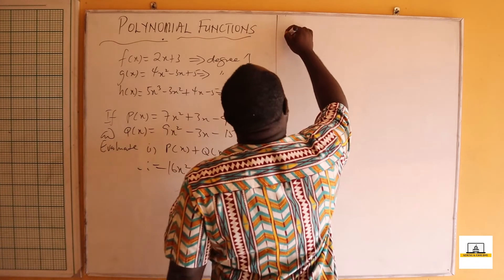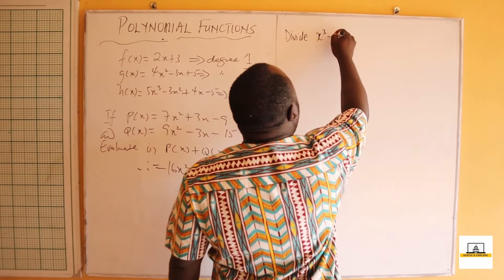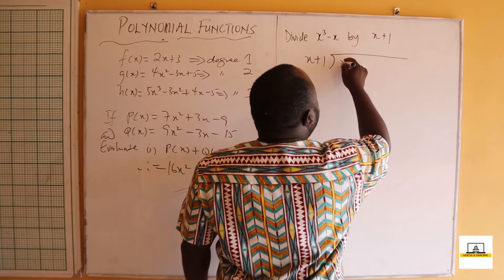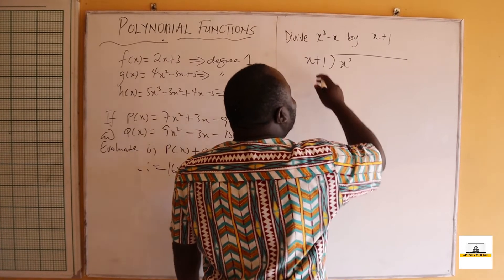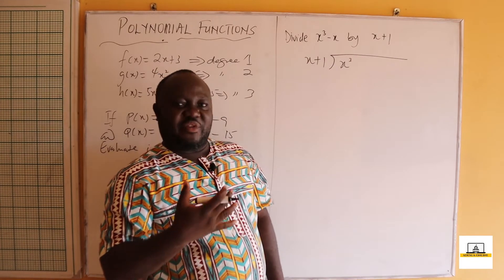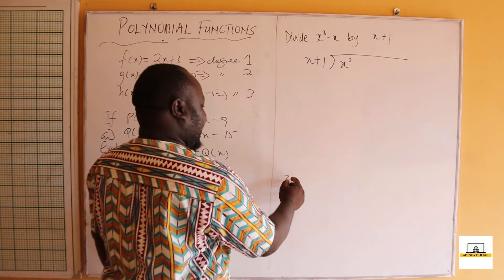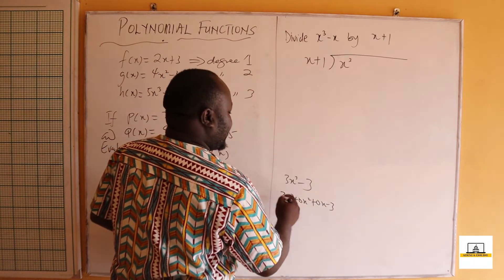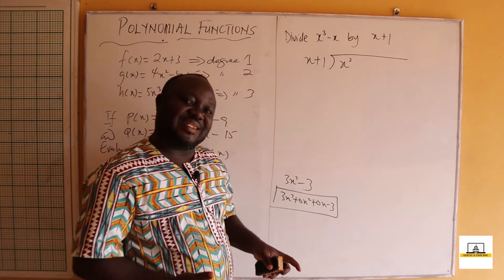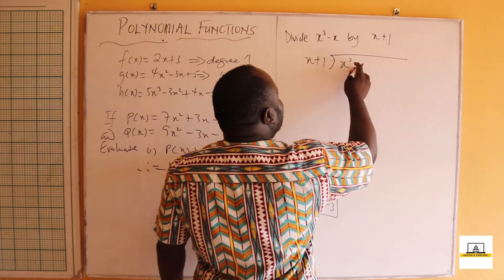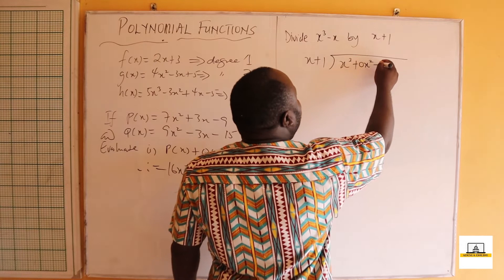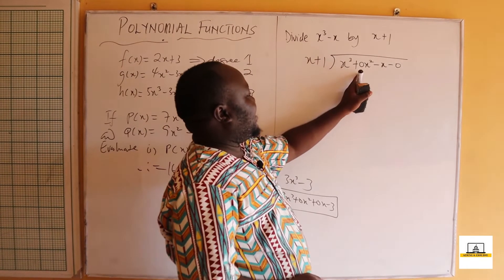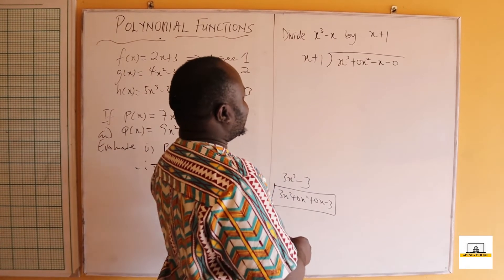Now for division — let's divide x³ - x by x + 1. We set up the long division with x + 1 dividing x³ - x. Note that x³ - x doesn't mean there are no x² or constant terms; they are simply zero. So x³ - x can be written as x³ + 0x² - x + 0, where the coefficients of x² and the constant are zero.